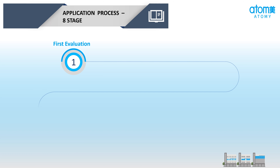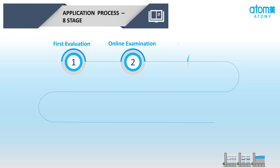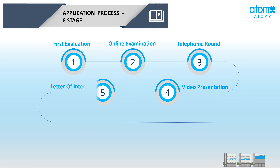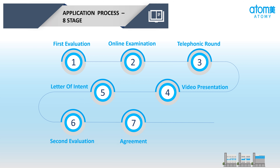Application के 8 Stages इस प्रकार हैं: 1st Evaluation, Online Examination, Telephonic Round, Video Presentation, Letter of Intent, 2nd Evaluation, Agreement, और Award Certificate।